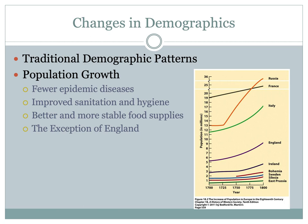Despite these important changes in food and nutrition, birth rates did not rise significantly during the 18th century. The population growth is due to a decline in death rates, not so much an increase in birth rates. The reason birth rates did not rise significantly is because many average Europeans were still getting married at a later age to delay the amount of children they had — because more children means more mouths to feed. The population growth was largely due to a decline in death rates.